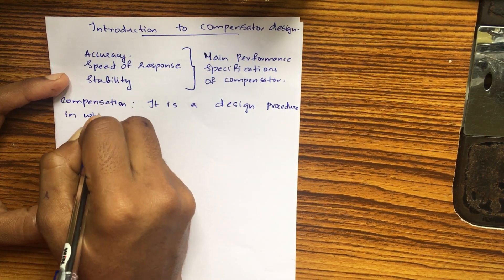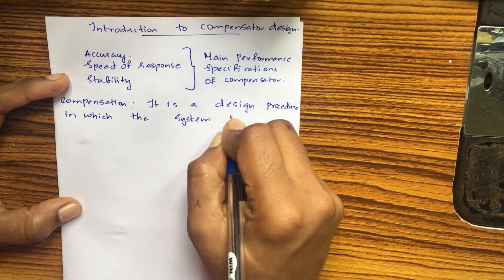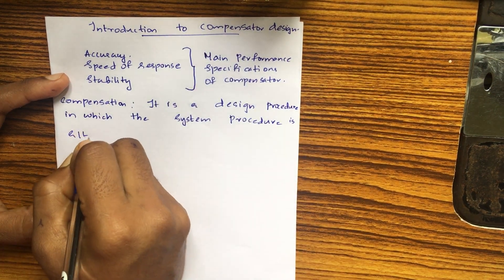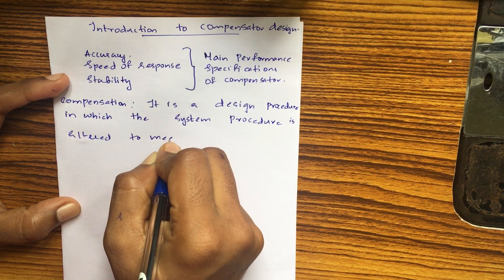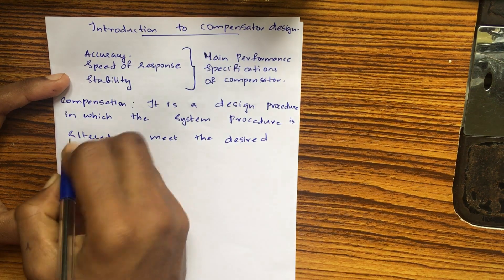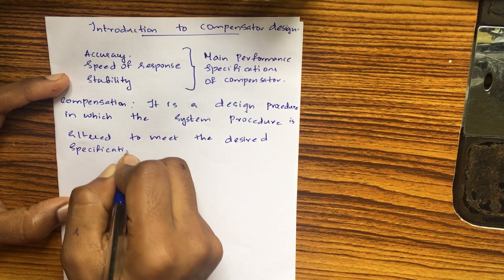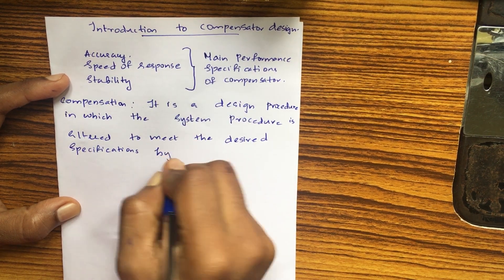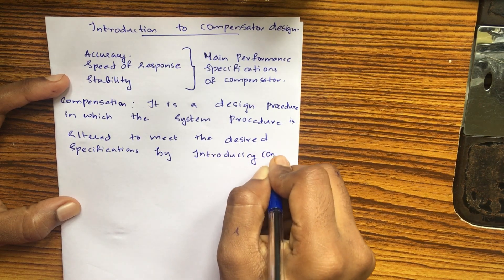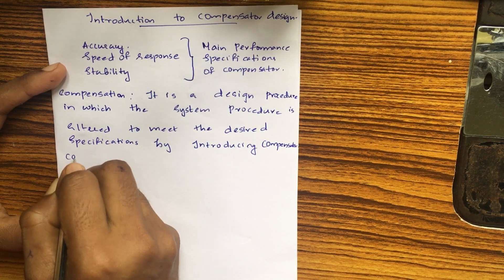The compensator is a device in which the system procedure is altered to meet the desired specifications, by introducing a compensator. Here is the compensator definition.